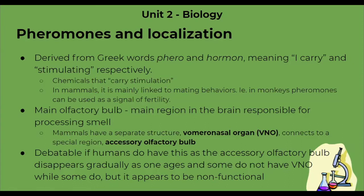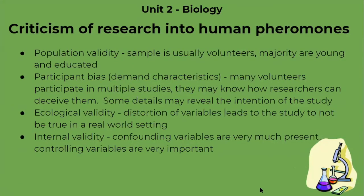Some humans do not have the VNO while some do, but even those that do have the VNO, it appears to be non-functional. Moving on to criticisms of research in human pheromones — the first is population validity. The sample usually used in pheromone research consists of volunteers.